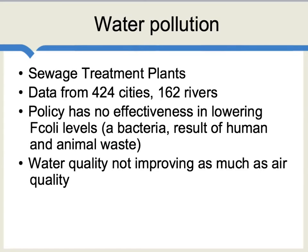Let's now look at water pollution. Here, a key fix is what are called sewage treatment plants, which do what the name indicates. The authors looked at data from 424 cities connected to 162 different rivers, and they're going to use the same method — looking at the cross-sectional variation in policy, comparing that to outcomes, and then adjusting for changes in the level of national pollution.